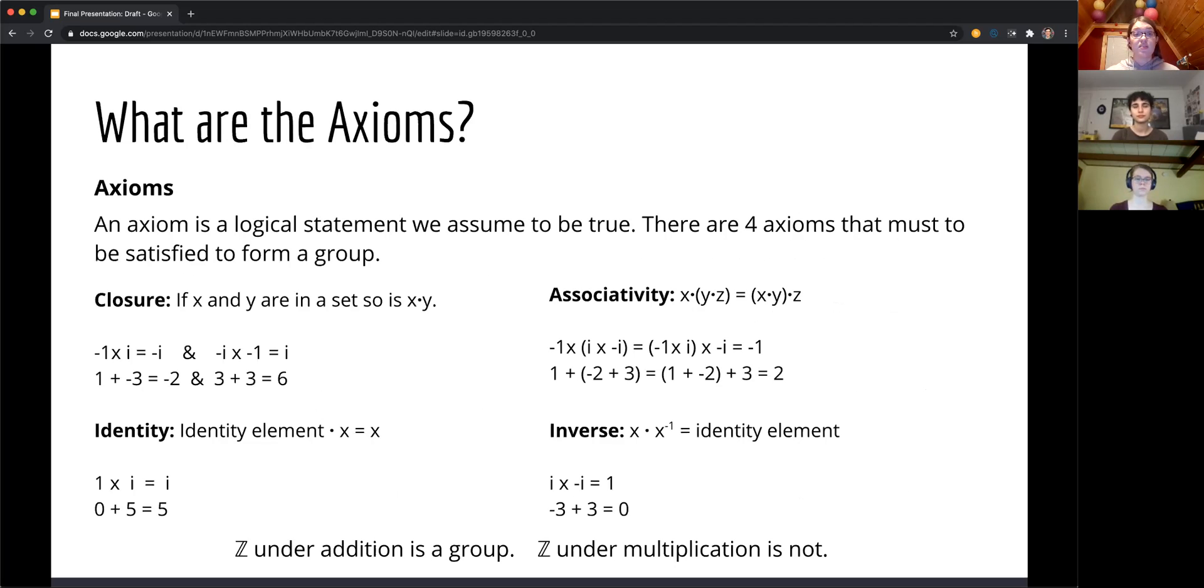What are the axioms? An axiom is a logical statement we assume to be true. There are four axioms that must be satisfied to form a group. Those four axioms are closure, associativity, identity, and inverse.